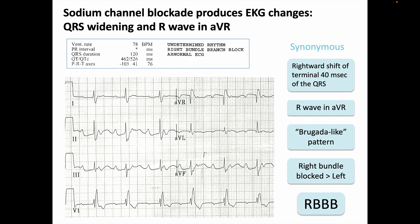This slide shows EKG changes seen with sodium channel blockade. This particular EKG is from a patient who overdosed on diphenhydramine, an over-the-counter antihistamine that causes sodium channel blockade at higher doses. We see QRS widening — the QRS duration here is 120 milliseconds, with normal being 80 to 100 milliseconds. There is also an atypical morphology of the QRS complex best seen in lead AVR. Normally all deflections in AVR are downward, but here a significant portion — the latter part of the QRS — appears above the isoelectric line.